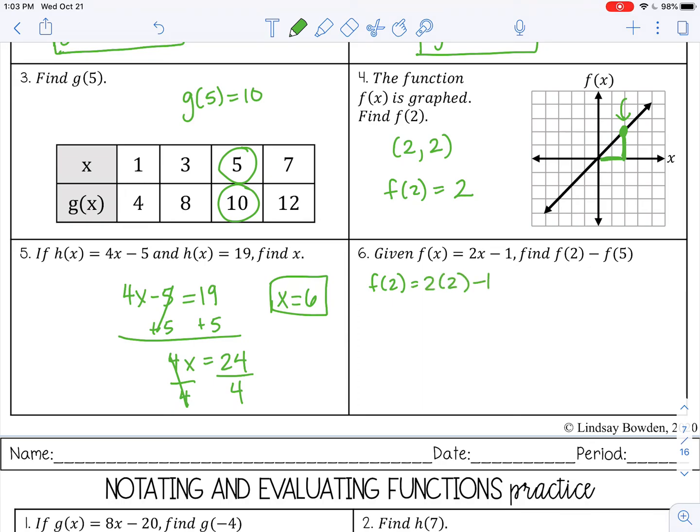I'm going to substitute in 2 for my x value. So that would be 4 minus 1, which is 3. And then I'm going to find f of 5. I'm going to substitute in 5 for my x value. So 2 times 5 is 10 minus 1 is 9.